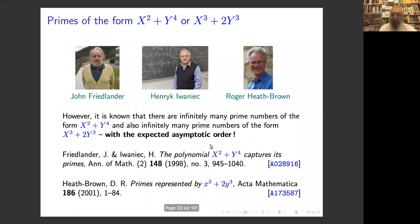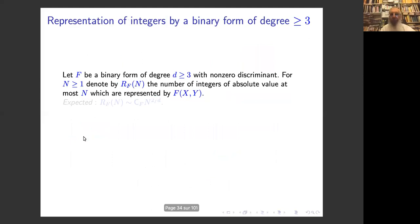There are many things we do not know, but let me quote some impressive known results. For the form x² + y⁴ and the form x³ + 2y³, it is known that there are infinitely many primes of these forms, and the right asymptotic order is known — by Friedlander and Iwaniec for x² + y⁴, and by Hooley for x³ + 2y³. So we know for x³ + 2y³ but we do not know for x³ + y³. I am going to investigate the representation of integers by binary forms of degree at least 3.